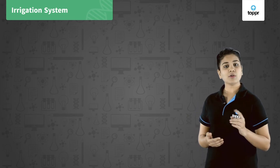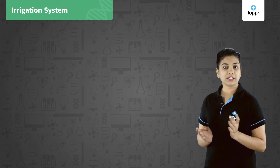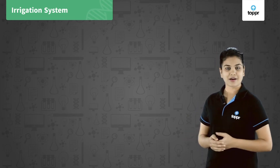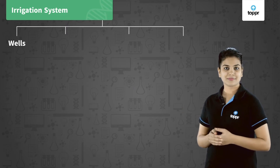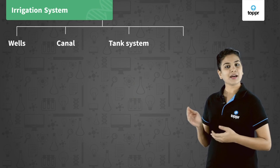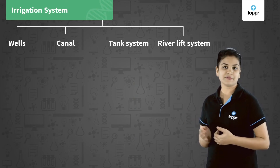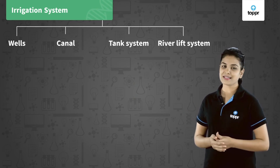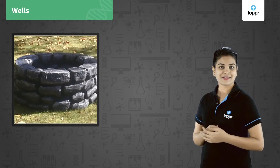Some of the commonly used irrigation systems are wells, canals, tank systems, and river lift systems.